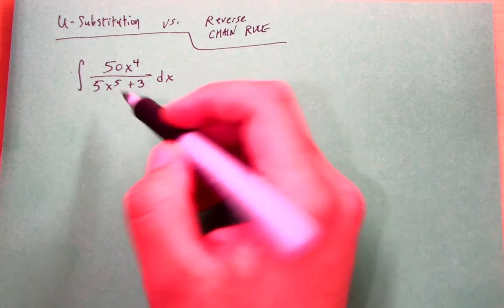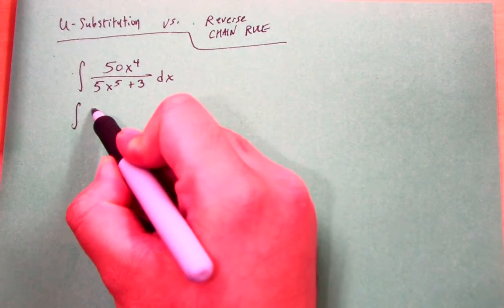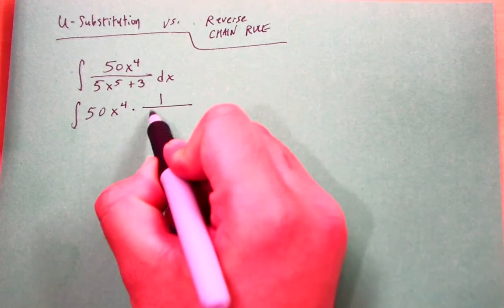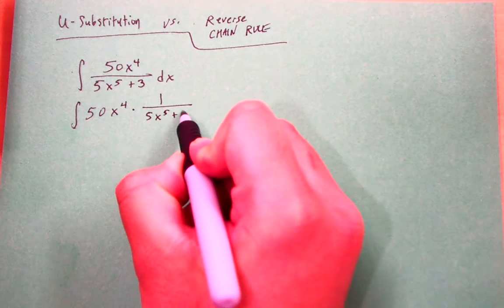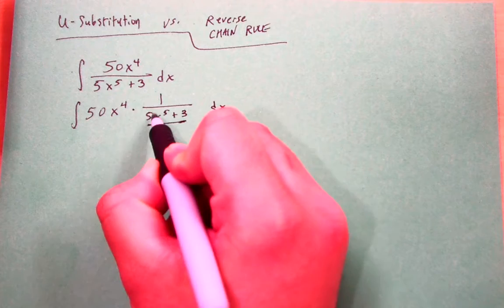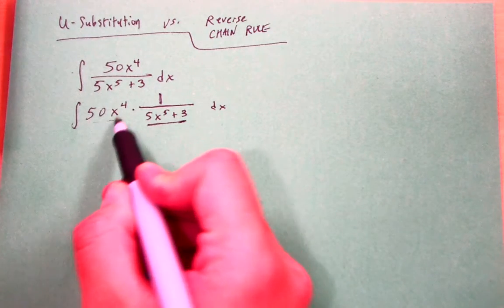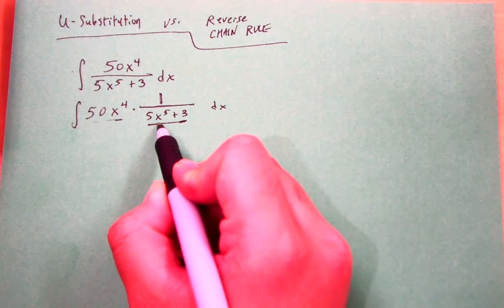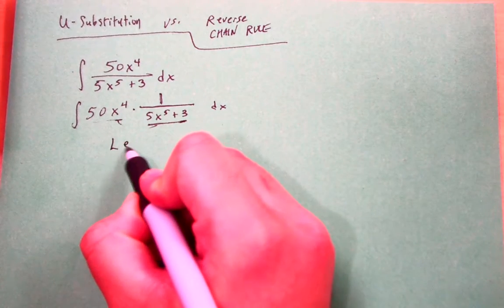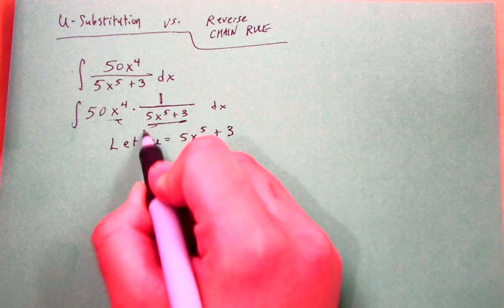So we'll first approach this from the sense of a u-substitution problem. I'm going to rewrite this slightly as 50x to the 4th times 1 over 5x to the 5th plus 3. So you can see I sort of have an inner part in the sense that this is having math done upon it, which is 1 over all that, and then I have this outer part next to it. So normally I would check to see if the reverse chain rule works but since I'm forcing u-substitution I'm going to go ahead and let u equal 5x to the 5th plus 3.